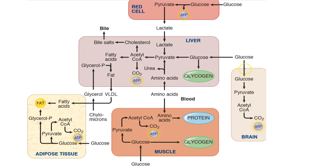First, coming on to glucose. Glucose is taken up by the liver and it forms pyruvate via glycolysis, and this pyruvate forms acetyl-CoA which is used for the TCA cycle to produce ATP. Glucose also forms glycogen, and this acetyl-CoA that is formed takes part in fatty acid synthesis and also in cholesterol synthesis, which is important for the synthesis of bile salts.